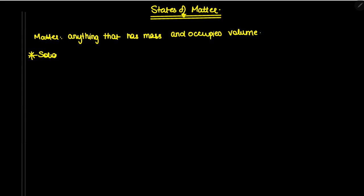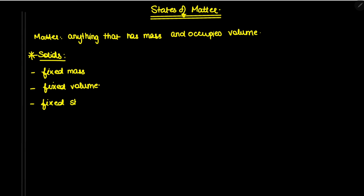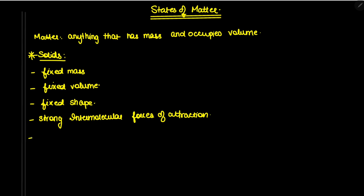Let's begin with solids. If in English I say a substance has particles that are very close together, in chemistry I'll say that substance is solid. Solids have fixed mass, fixed volume, and fixed shape. They also have strong intermolecular forces of attraction.